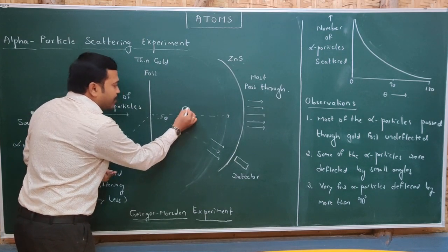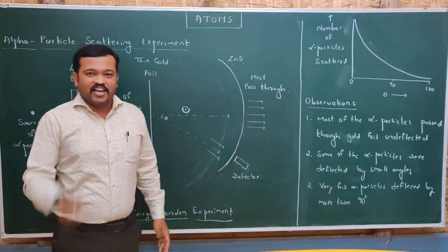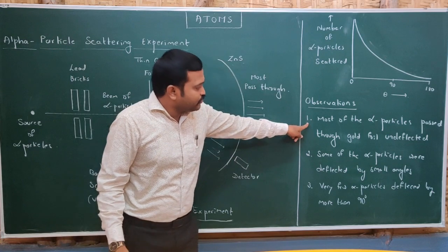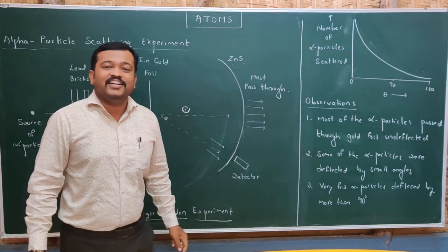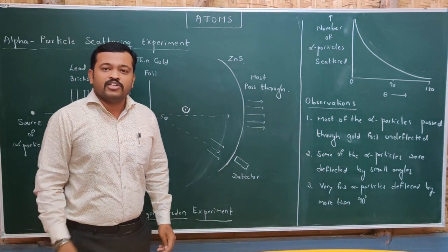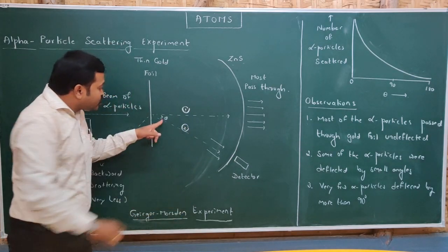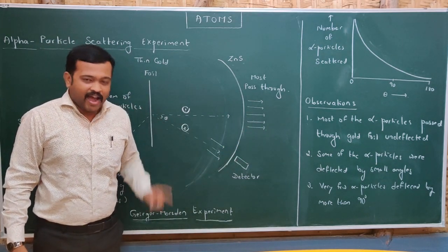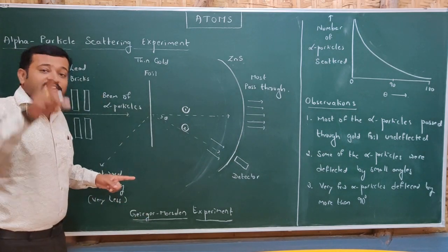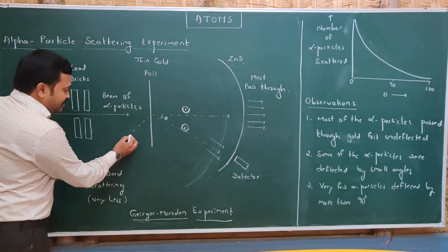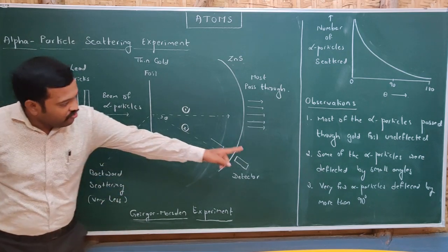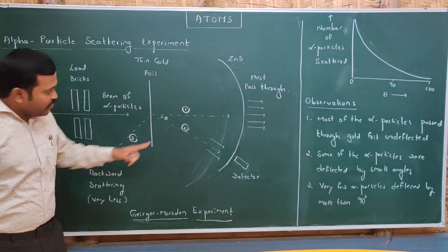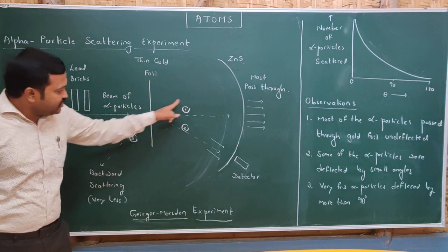This was the experimental setup made by Geiger and Marsden. They made certain observations. The first observation was that most of the alpha particles passed through the gold foil undeflected — 99.86% of the alpha particles did not deflect at all. The second observation was that some of the alpha particles deflected at small angles. Surprisingly, some alpha particles even deflected by more than 90 degrees.